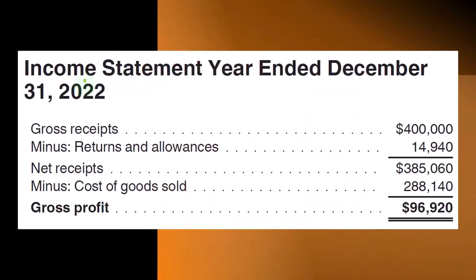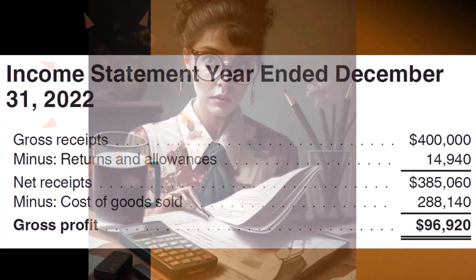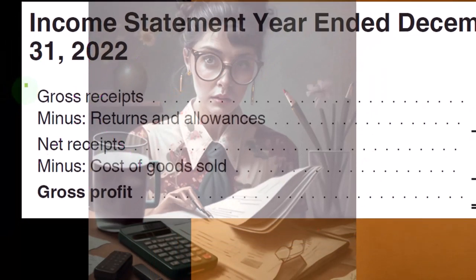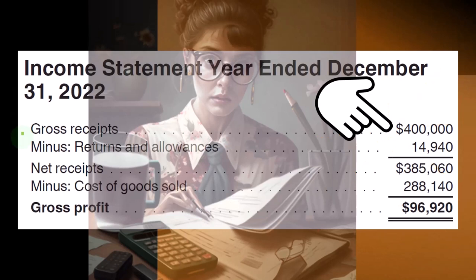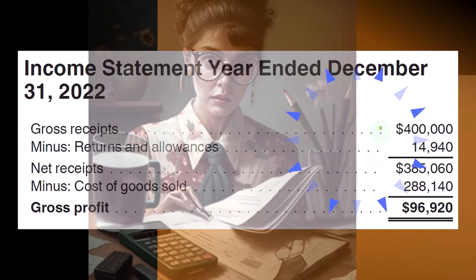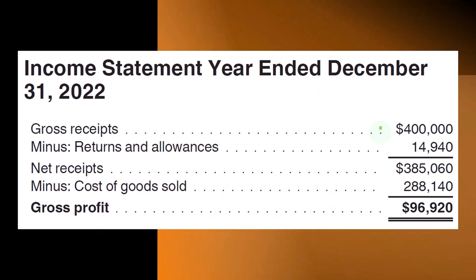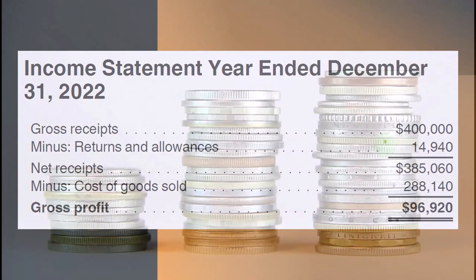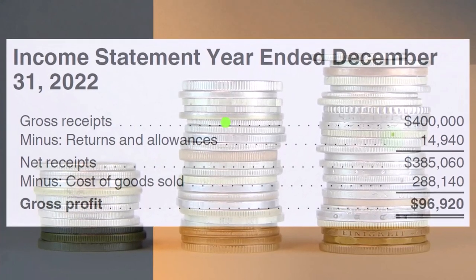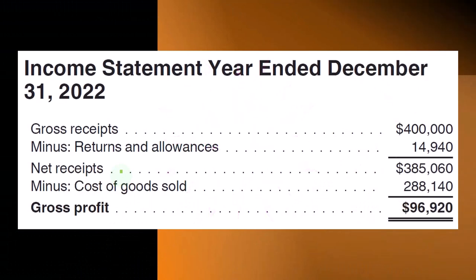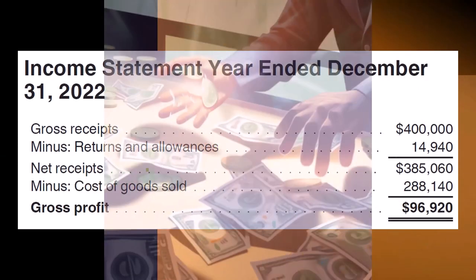Here's an illustration of the gross profit section of an income statement for a retail business for the year ended December 31, 2022. Gross receipts are $400,000. Returns and allowances of $14,940 are shown as a contra revenue account — not an expense and not a direct reduction to the sales line — giving us net receipts of $385,060. Net receipts is not the same as net income; it's just the net sales line at the top.